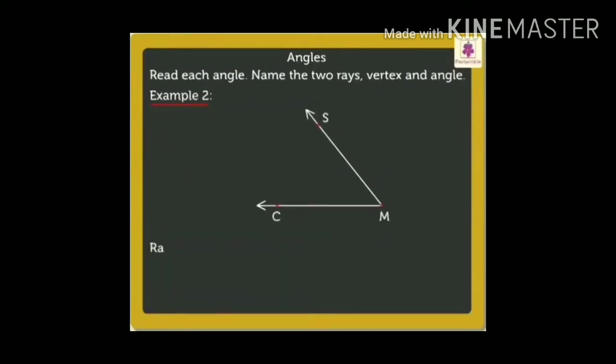Come again with example number 2. In this angle you can see, CMS is forming an angle. The two rays which is forming this angle are MS and MC. The vertex is point M and the angle formed here is SMC or we can say CMS.